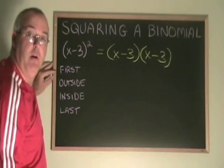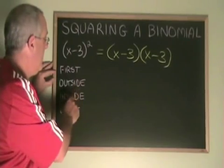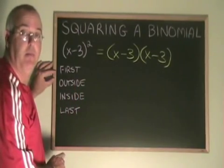At this point, we are just multiplying two binomials. We can use FOIL - first, outside, inside, last - to simplify this.